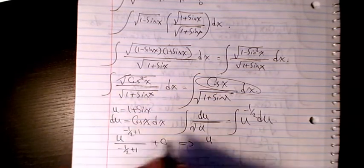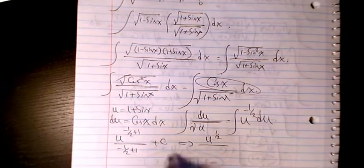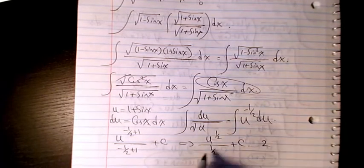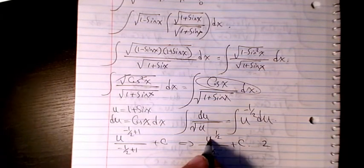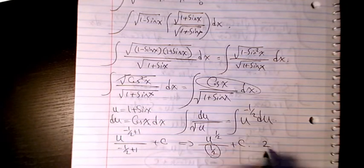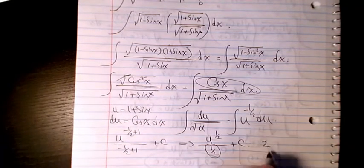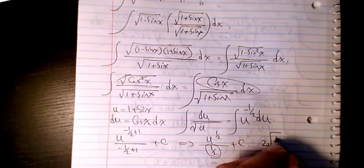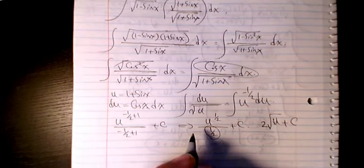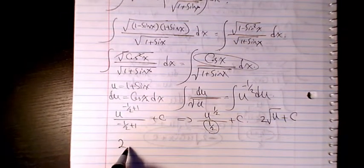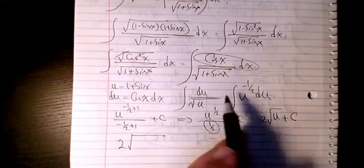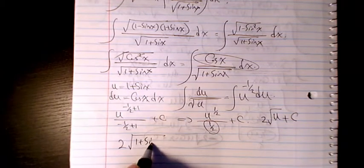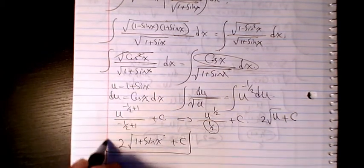Then it will be u to the power of one-half divided by one-half, plus C. The denominator of one-half becomes a factor of 2 in the numerator, and u to the power of one-half is the same as square root of u. So the final answer is 2 times square root of (1 plus sine x), plus C.